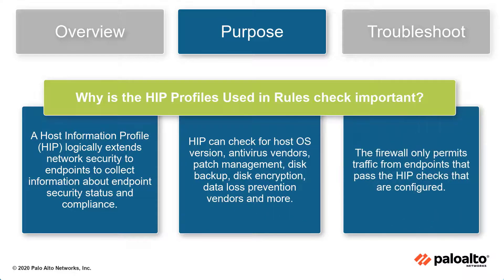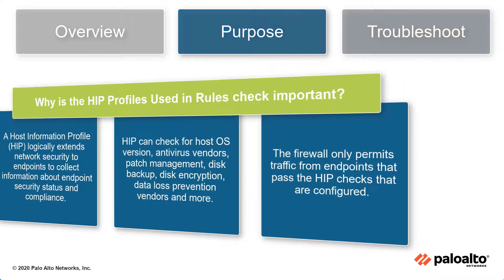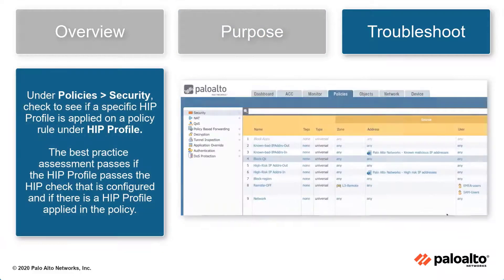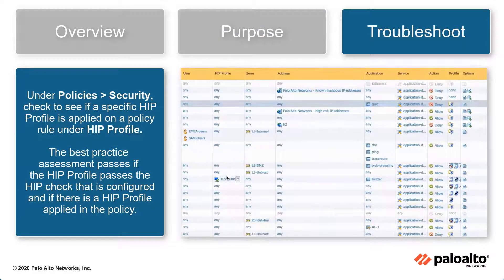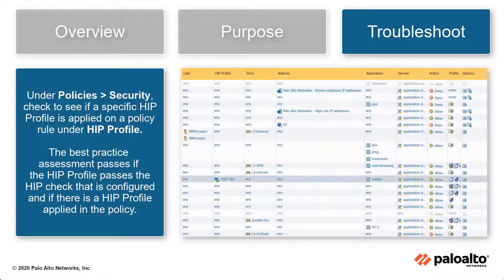The firewall only permits traffic from endpoints that pass the HIP checks. Under Policies > Security, check to see if a specific HIP profile is applied on a policy rule under HIP profile. The best practice assessment passes if both the HIP profile passes the HIP check that the network admin configured, and if there is a HIP profile applied in the security policy.